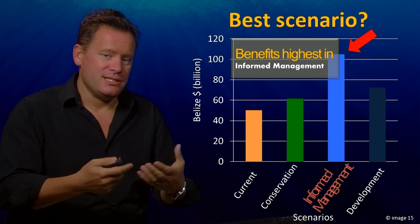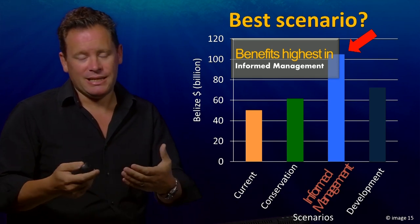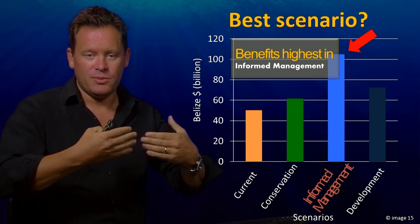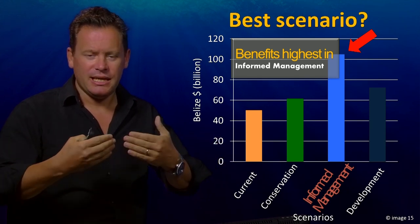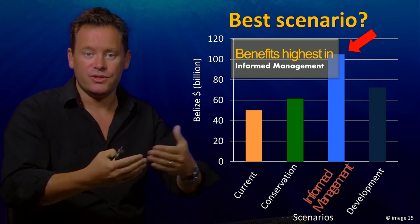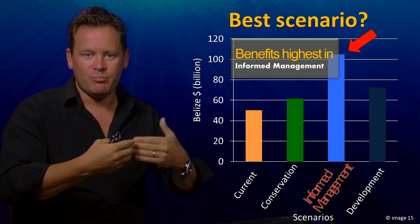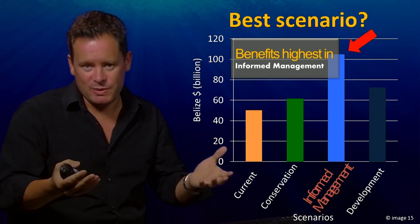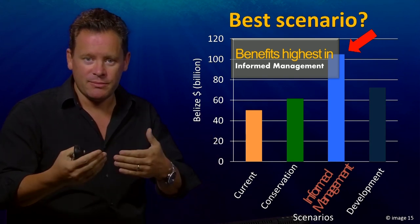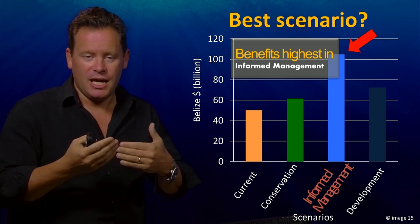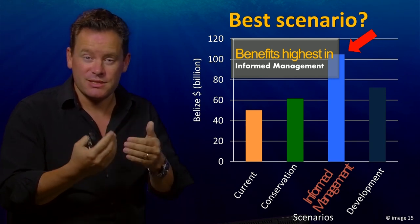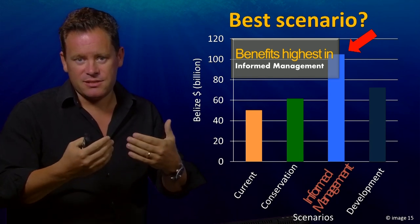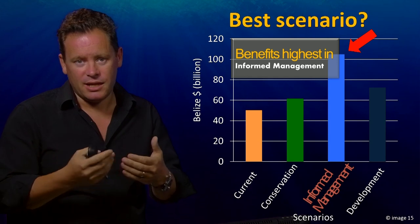This approach isn't perfect. What it's essentially doing is taking the best available science and synthesizing it to create models that help us predict, given some kind of development or future activity, how the benefits that people derive from the ocean will be distributed and how large those benefits will be. Over time, as the science improves and we understand more about how people value systems and how ecosystems work, we'll get better at doing this — and that makes this a very exciting and important area of research.